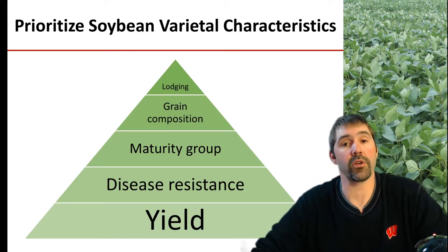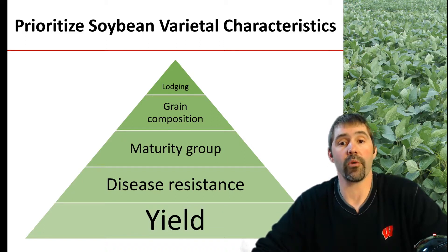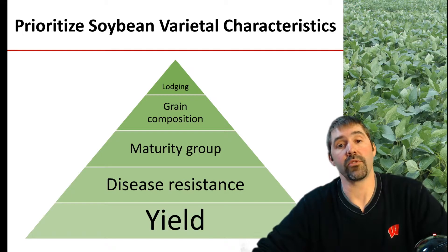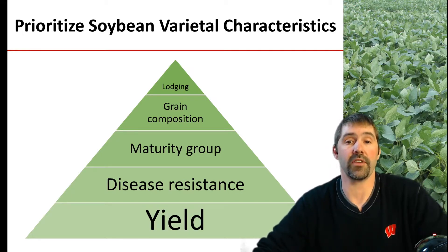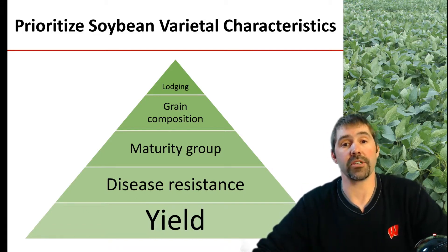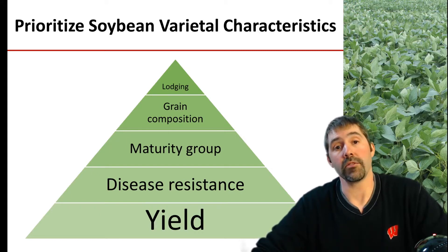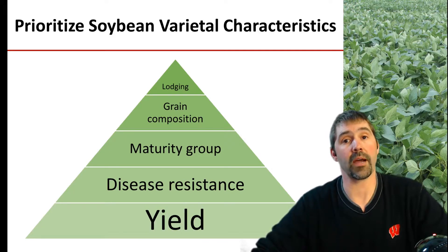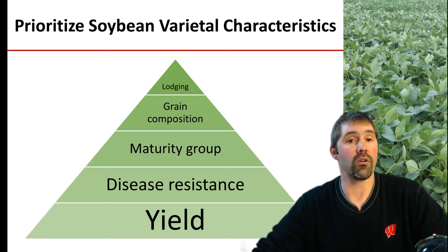If we had to prioritize soybean yield varietal characteristics when selecting a variety, obviously growers are primarily focused on yield. We'll be discussing how to properly select a soybean variety, but most of our primary decision should be based on yield. The second decision is understanding what disease resistance characteristics meet the demands of specific fields. Next, we'll discuss maturity group limitations — what maturity group growers should select based on their geography within Wisconsin. Lastly, grain composition: about 10% to 12% of Wisconsin acres are food-grade soybeans, where grain composition moves up right behind yield in varietal characteristics. Lodging is also a consideration, though breeding efforts over the last 20 to 25 years have really limited lodging constraints in soybean production.